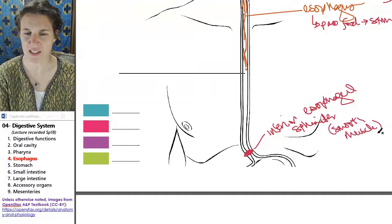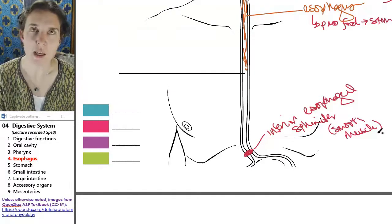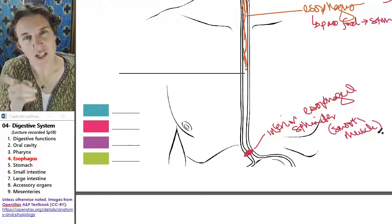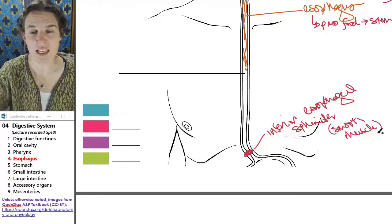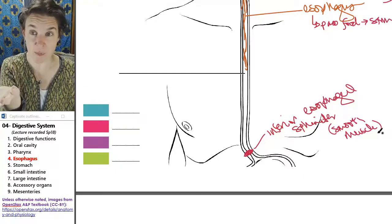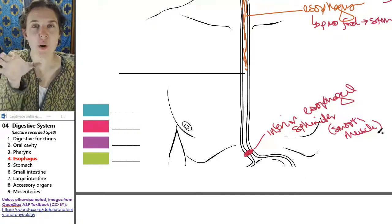Why is that significant? Smooth muscle is involuntary muscle. That sphincter is not strong enough to keep your stomach contents from regurgitating back up your esophagus. So there's help.